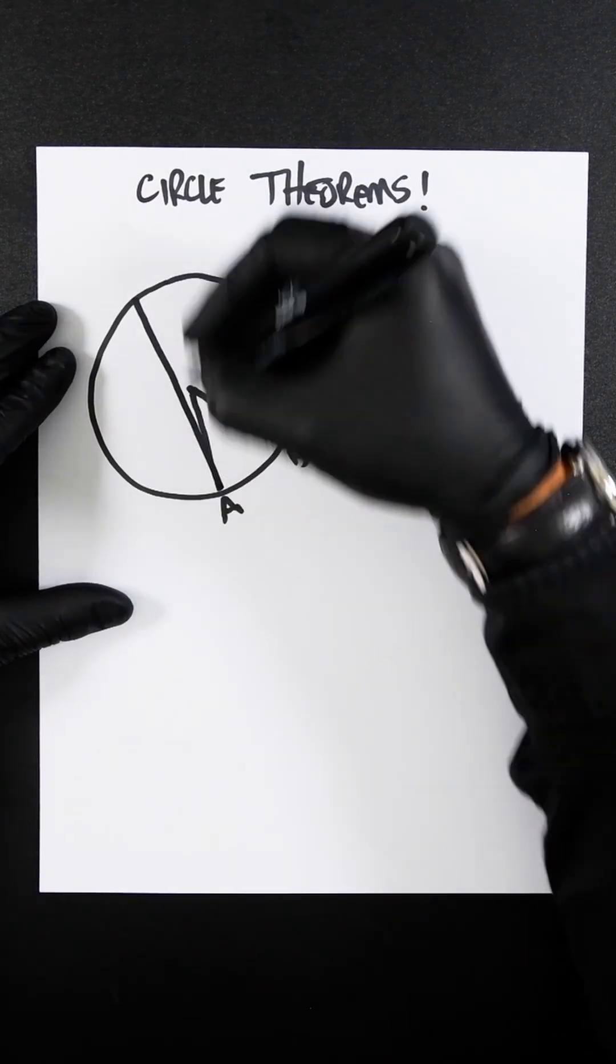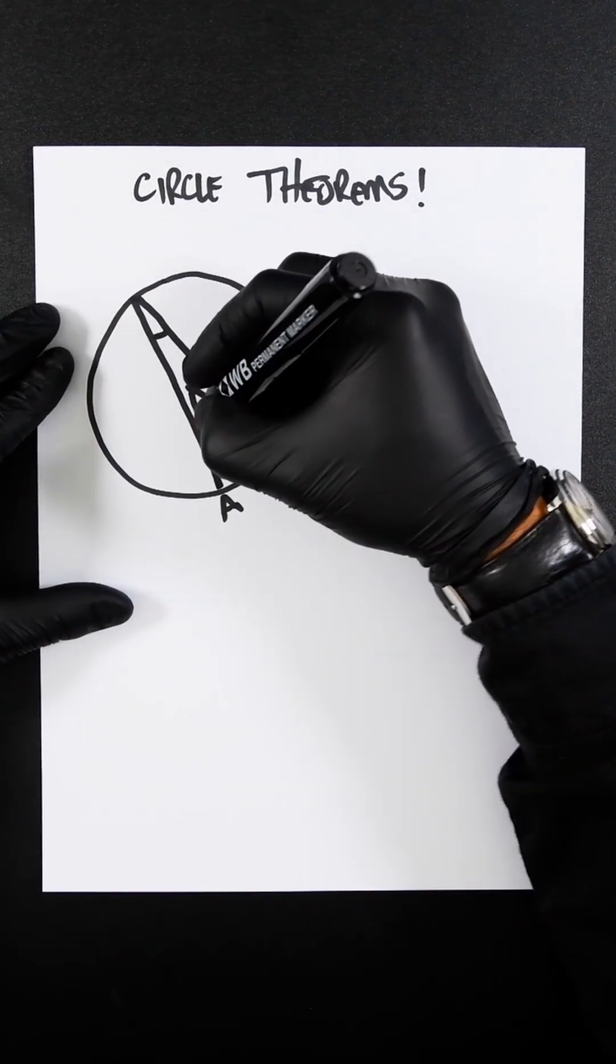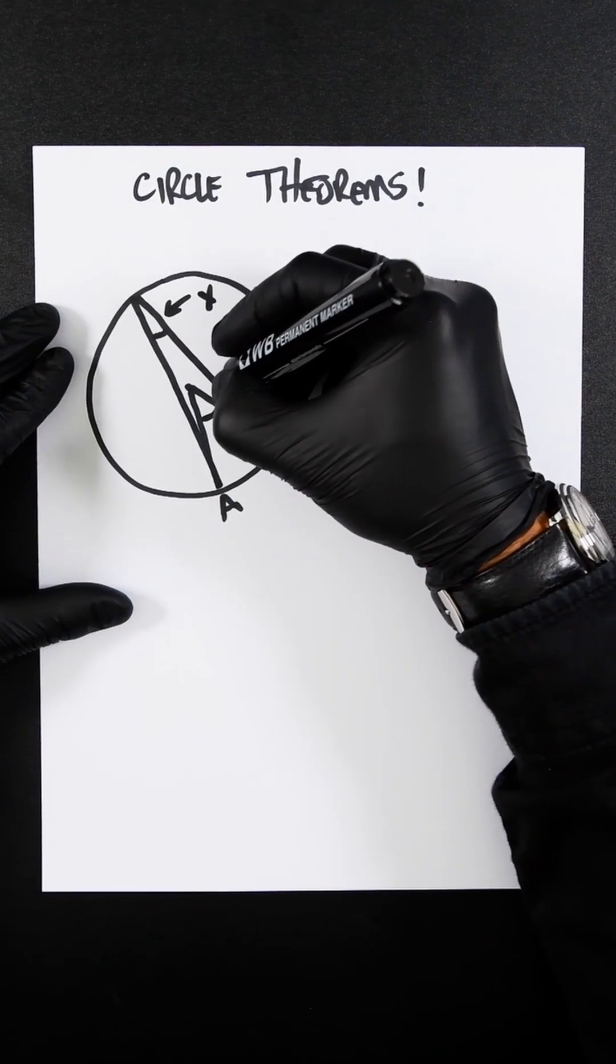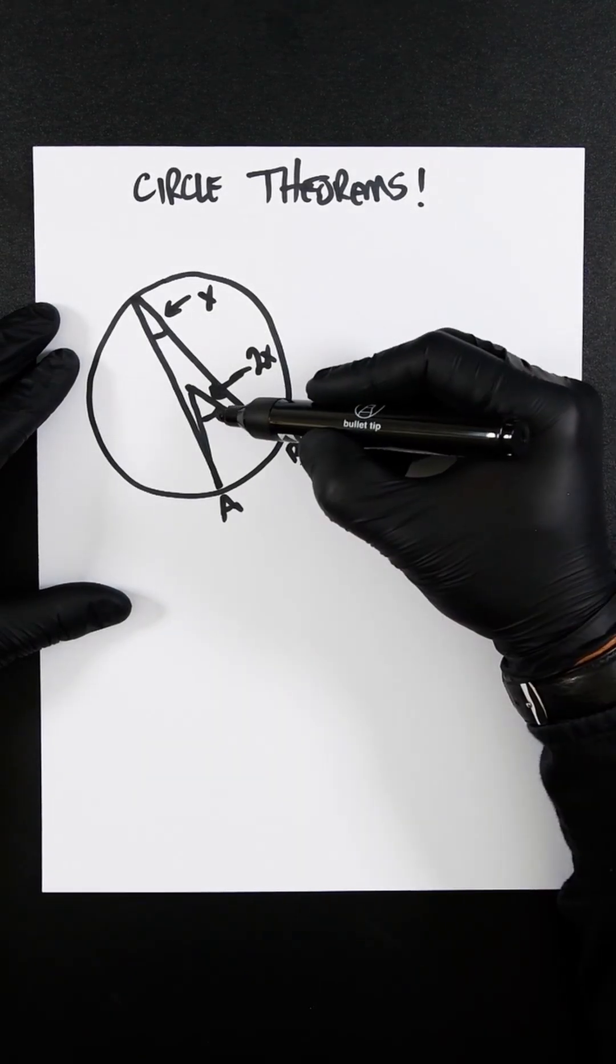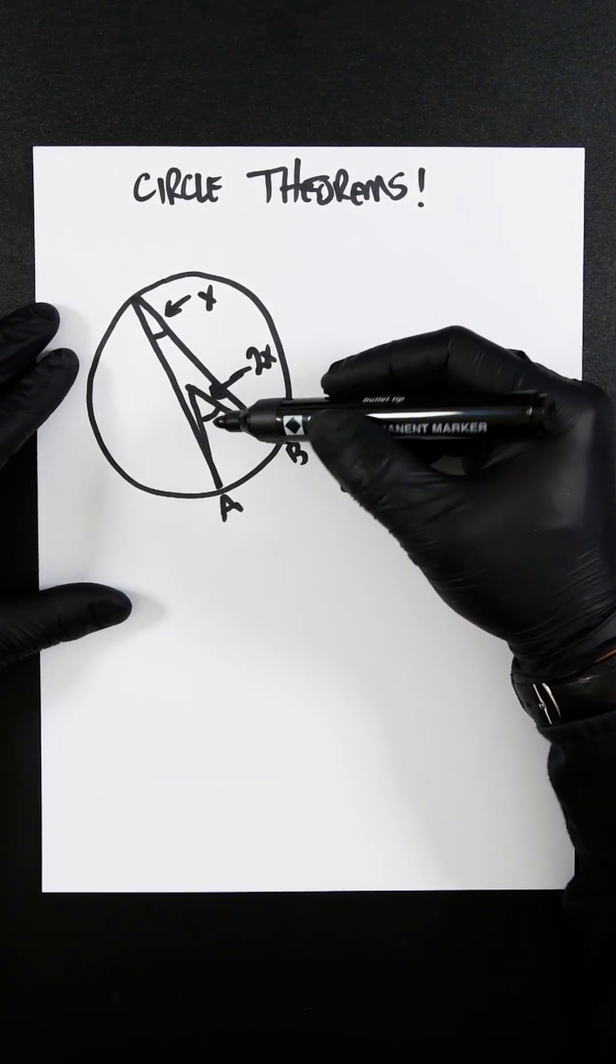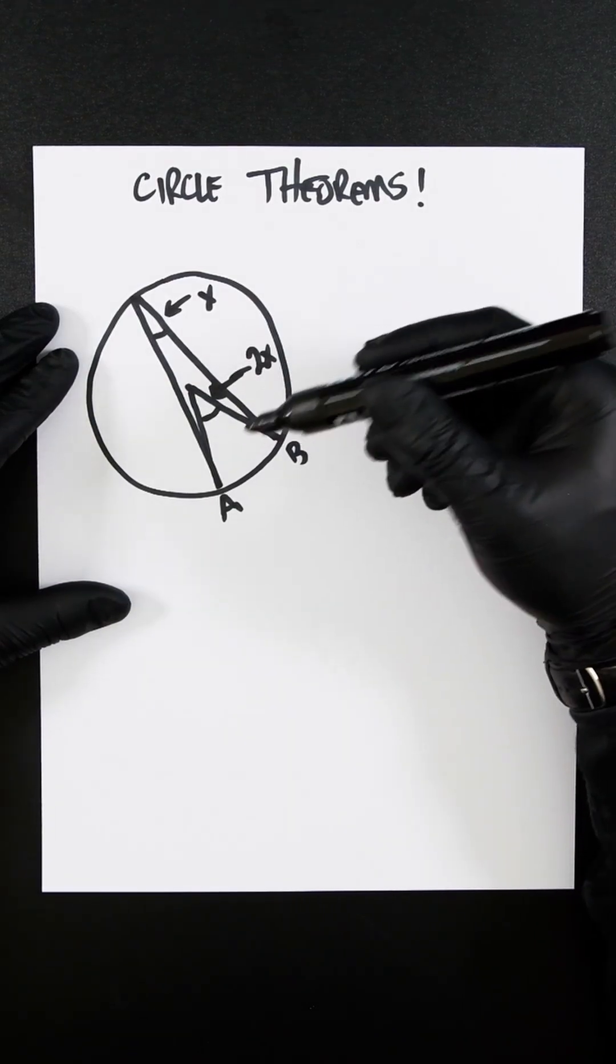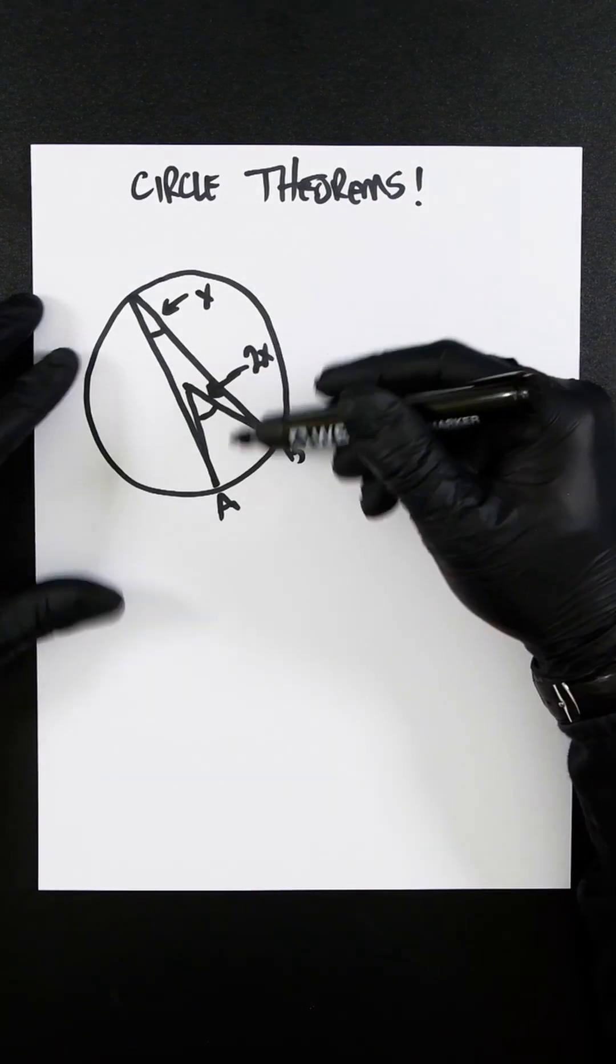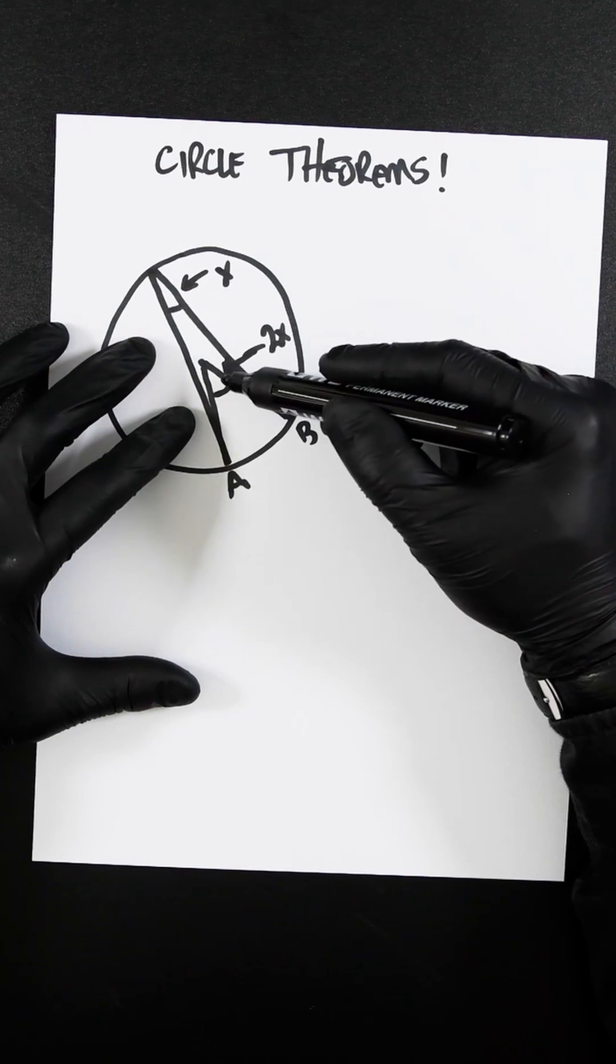That means we have two angles. This angle is x and this angle is 2x. So the angle at the center of a circle is twice the size of the angle at the circumference when they are both subtended by the same arc. Every time you see that they have the same arc and they're meeting at these same two points, you know that the angle here is twice the size of this.